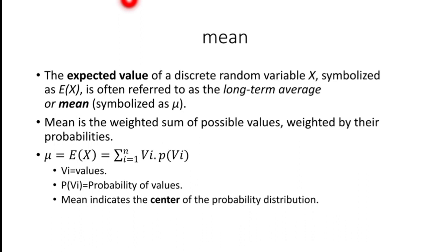Mean is nothing but the expected value of some random variable X, given by the symbol E of X. It can also be referred to as long-term average or mean. In simple words, mean is the weighted sum of all possible values weighted by their probabilities. When I explain with an example you're going to understand this concept very easily.